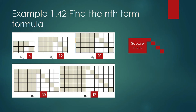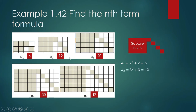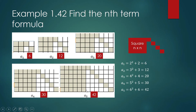The number of tiles in the big square is n by n. For the first term, it's 2 times 2 plus 2, which is 6. For the second term, it's 3 times 3 plus 3, which is 12. For the third term, it's 4 times 4 plus 4, which is 20. For the fourth term, it's 5 times 5 plus 5, which is 30. For the fifth term, it's 6 times 6 plus 6, which is 42.